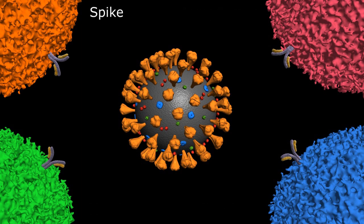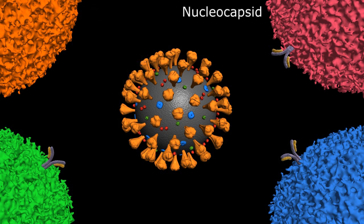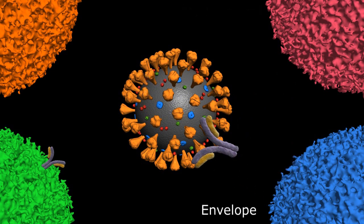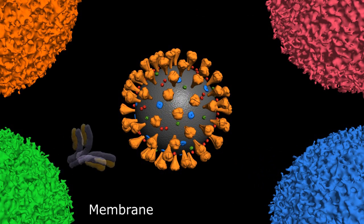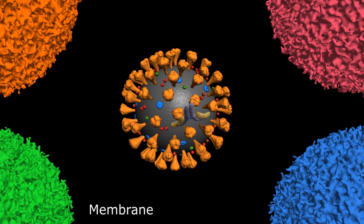Specifically, the spike protein plasma cell produces antibodies which attach only to the spike protein of the virus, the envelope plasma cell to the envelope protein of the virus, and the membrane plasma cell antibodies which are specific for the membrane protein of the virus.